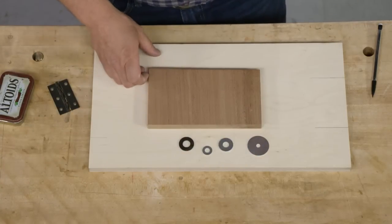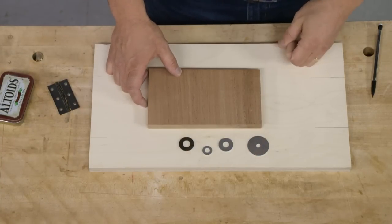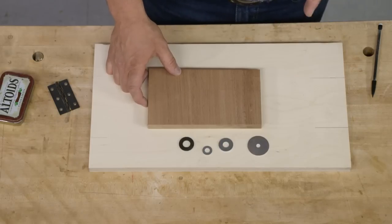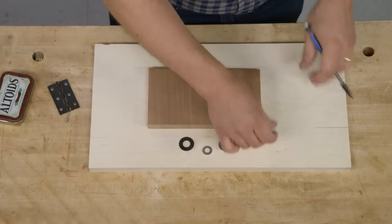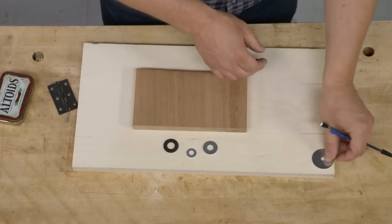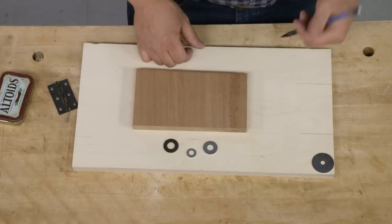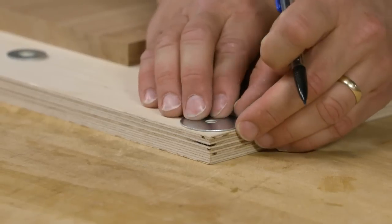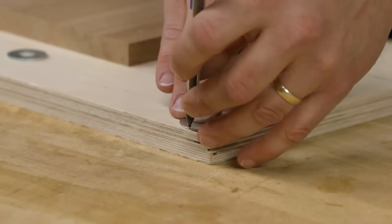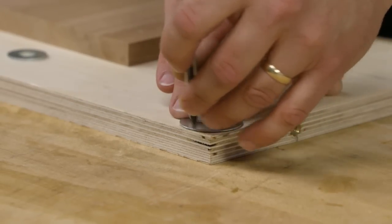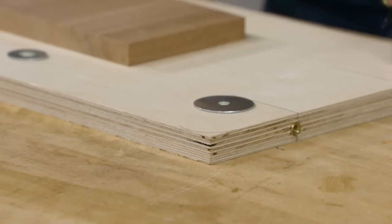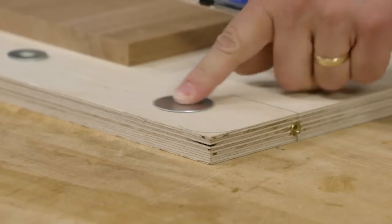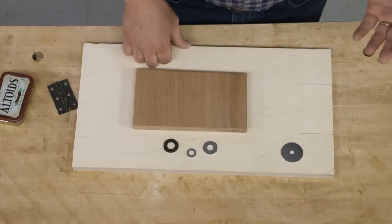Regular washers - a lot of guys I know have a coffee can full of them. There's two ways you can use washers. Often on a project, we need to put a simple radius to soften the edges. You can line up the washer on the corner of a project and trace the profile of it. There you go - an easy way to create that radius.